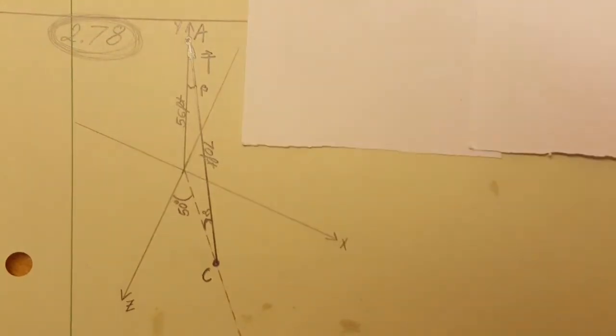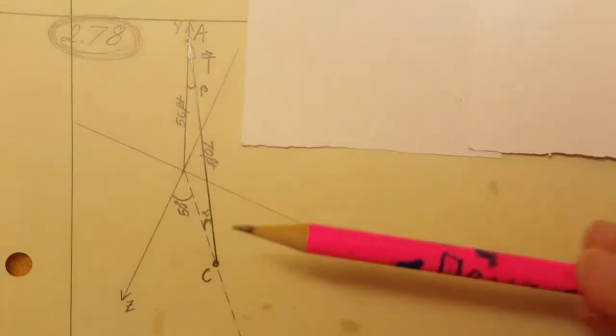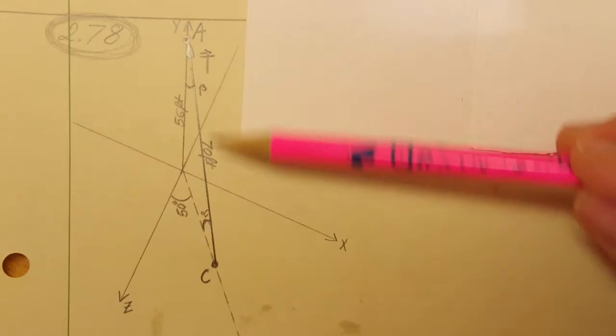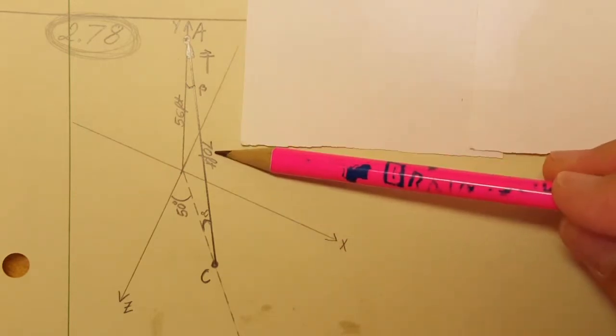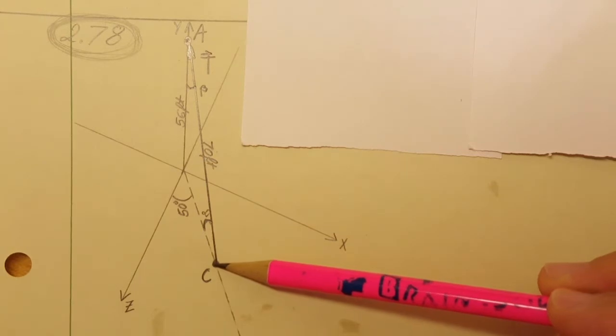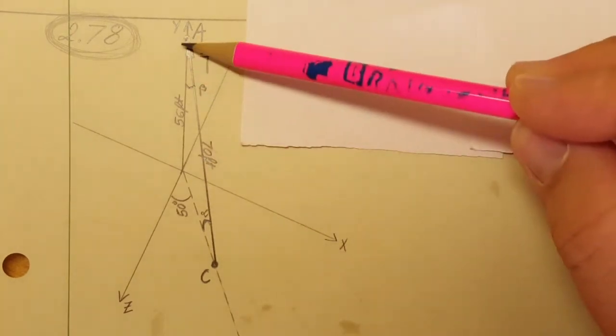Okay, in this problem we're going to do some 3D vector calculations. We have cable AC, which is 70 feet long, and it's connected to point C and point A.